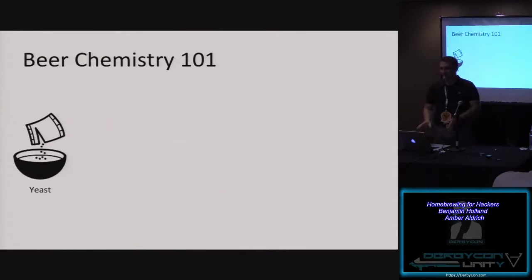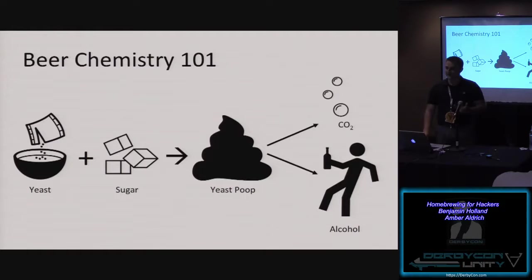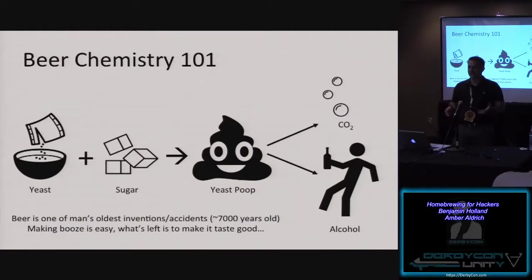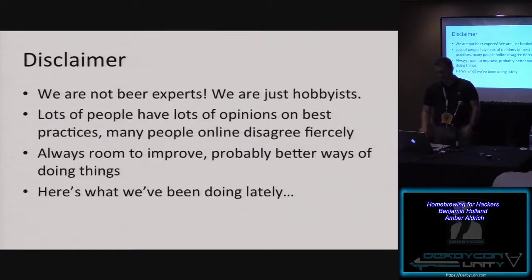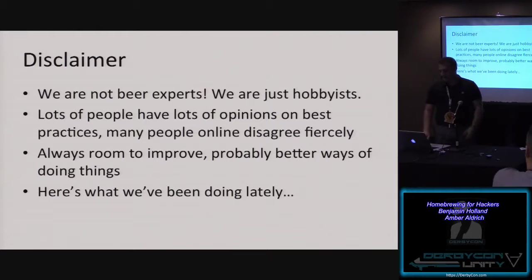Beer chemistry 101: we start with yeast — yeast is probably the most important thing. We feed it some sugar and that gives us yeast poop, but that yeast poop is actually awesome because it is alcohol and carbon dioxide, which is exactly what we want in our beer. Beer is one of mankind's oldest inventions, up there with fire, and it was probably just an accident. Making booze is really easy; you can't really mess it up too much, you just have to make it taste good. We're not beer experts — we're hobbyists — and there's lots of opinions on the internet about the right way to do things.